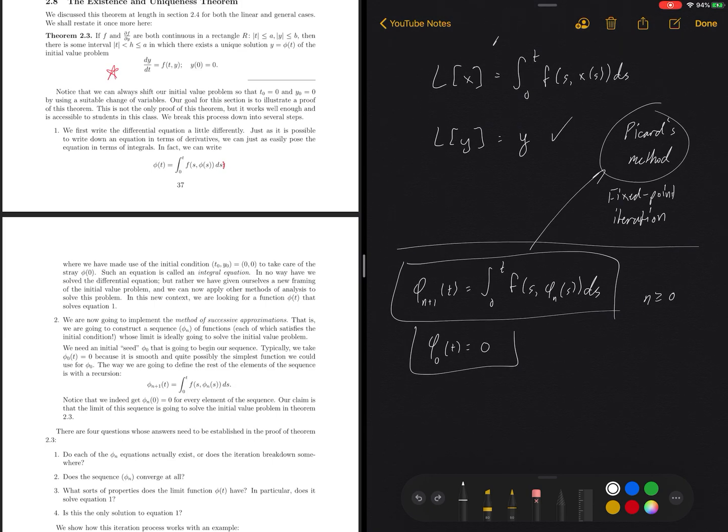We go ahead and take φ₀(t) equal to the zero function, and we just iterate this for n greater than or equal to zero. Let's see exactly what's going on here.